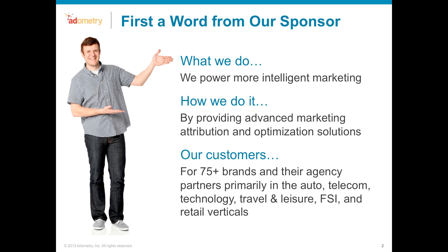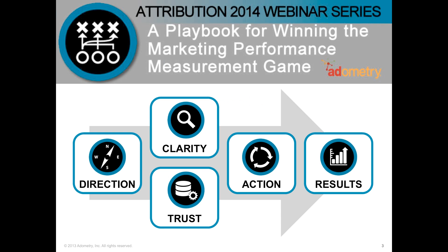Let's dive in. This series is a five-part series, and this is session number one. It's really mapped to a playbook that we've put together to help our customers and prospects take the journey to advanced attribution. The five parts begin with setting your direction — what we'll talk about today in terms of your objectives. Taking on, planning, and implementing a cross-channel marketing attribution solution can seem like a daunting task, but with a proven playbook, some forethought, and available resources, you can ensure success.